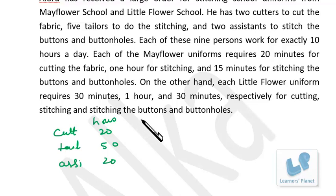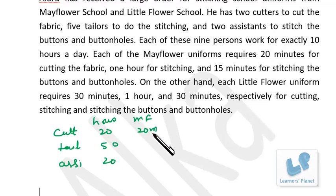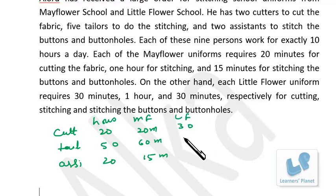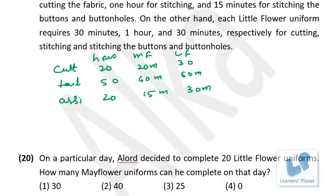Arranging data in a table: 2 cutters × 10 hours = 1200 minutes available; 5 tailors × 10 hours = 3000 minutes; 2 assistants × 10 hours = 1200 minutes. Mayflower: 20 min cutting, 60 min stitching, 15 min buttons. Little Flower: 30 min cutting, 60 min stitching, 30 min buttons.